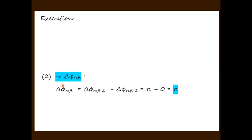We then find the phase difference due to reflection. We take the phase difference due to ray 2 and subtract the phase difference on reflection due to ray 1. We see that this gives a pi phase difference.